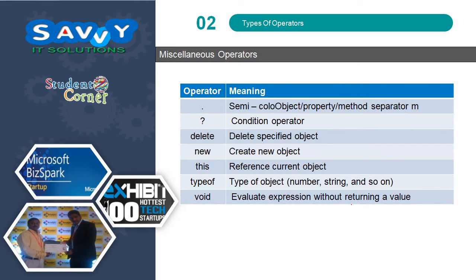The next one is Miscellaneous Operators, also called Special Operators in JavaScript. These include: dot — object property or method separator; question mark — Conditional Operator; delete — deletes a specified object; new — creates a new object; this — references the current object; typeof — returns the type of an object such as number, string, etc.; and void — evaluates an expression without returning a value.